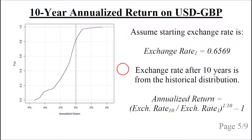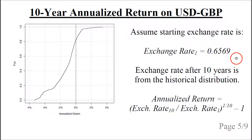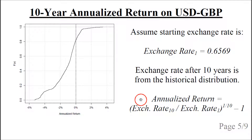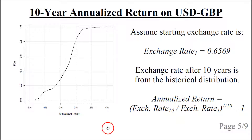Now let's look at the 10-year annualized return. In the first year we exchange from British pound to US dollar, and after 10 years we exchange back. We set the beginning exchange rate at 0.6569 as before, and the exchange rate 10 years afterwards is selected from the historical distribution. We then use the formula: the exchange rate after 10 years divided by the beginning exchange rate, taken to the power of 1 divided by 10, minus 1, to get the annualized return.